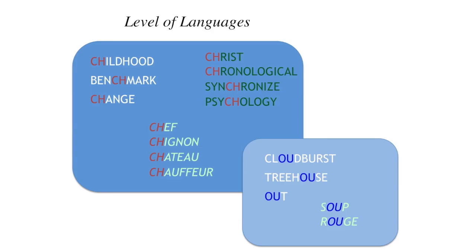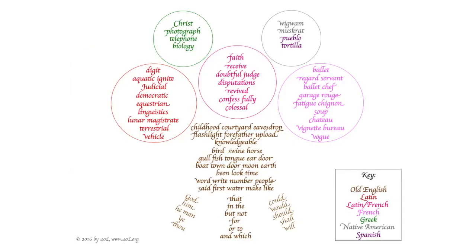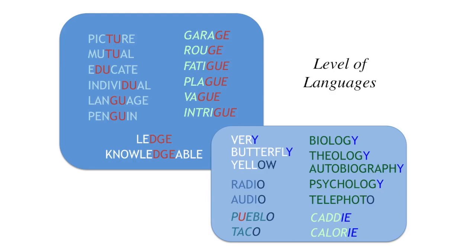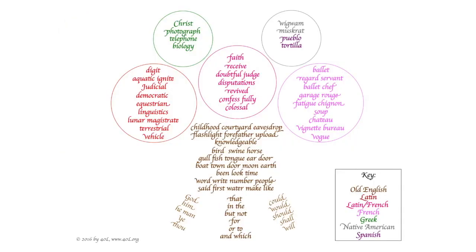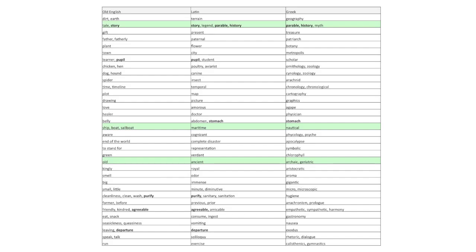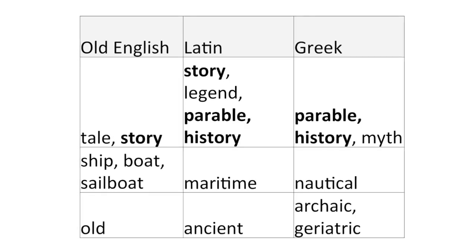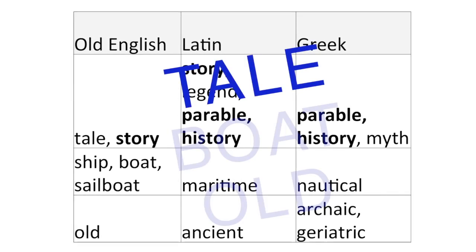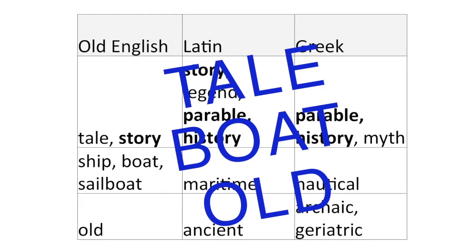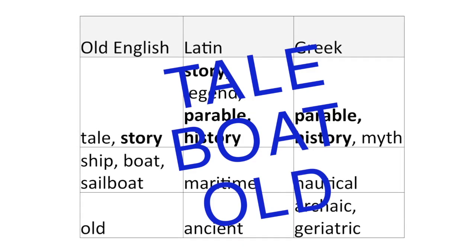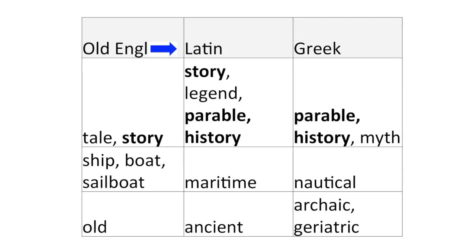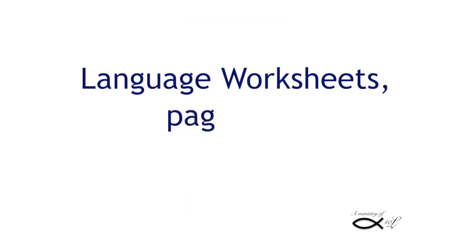Your assignment is to write three similar sentences using first primarily words of Old English origin, then mainly Latin words, then with Greek. There's a word origin choice grid to help — look up the Old English column on the left, pick three or four words, then circle that row across. For example, using the Old English words 'tail,' 'boat,' and 'old': 'This is a tale of an old boat.' Latin: 'An ancient maritime legend exists.' Greek: 'The archaic myth is nautical.' Time to make your own sentences — see you back in five minutes.